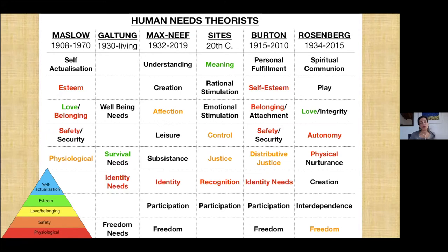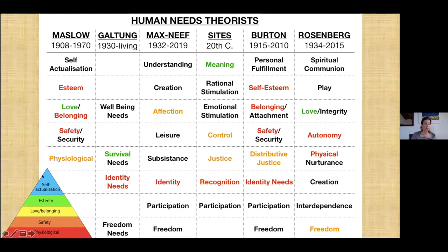We are all familiar with Maslow. Maslow is the go-to triangle that helps us think of needs as a sequential, satisfying life experience — that we satisfy one need and then progress to the next until we achieve some level of self-actualization. What I've found is that Maslow was looking at a positive psychology of human potential, but he wasn't looking at conflict.